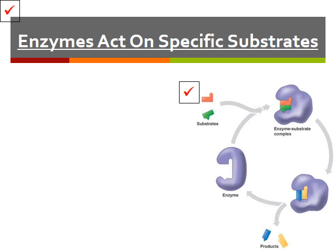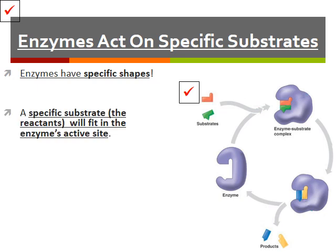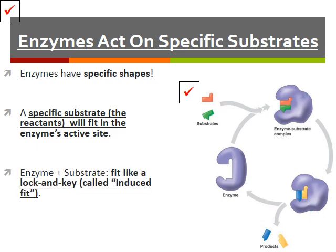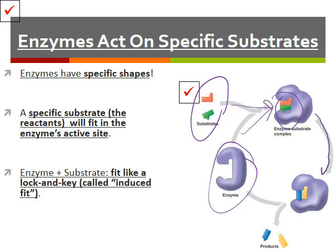Enzymes interact with substrates and act on very specific ones. Enzymes have very specific shapes, and a specific substrate, or reactant, will fit into that enzyme's active site — the enzyme and substrate fit together like a lock and key, which is called an induced fit. The substrates combine with the enzyme by fitting into the active site, a chemical reaction occurs inside the enzyme, and when the process is over, it releases the products — which are different from the original substrates — and the enzyme is free to be used once again.